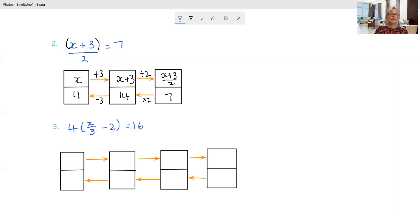Let's check if we're right. We've found that x is 11. 11 plus 3 is 14 divided by 2. Yep, that is 7. It does work. Thank goodness. Let's do it showing the normal way of showing the working.